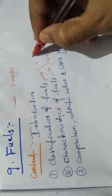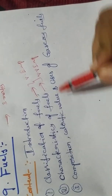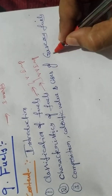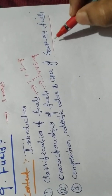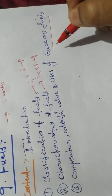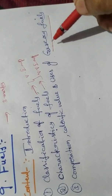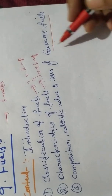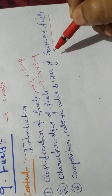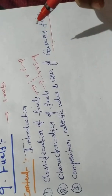Composition, calorific value, and uses of gaseous fuels. There are six gaseous fuels: producer gas, water gas, natural gas, and others. So composition, calorific value and uses — this is also important.